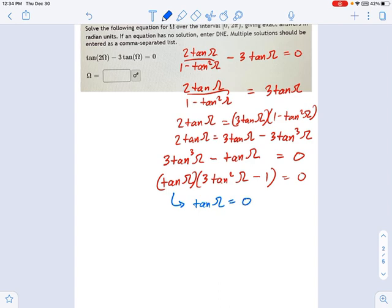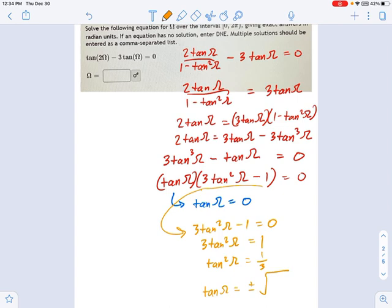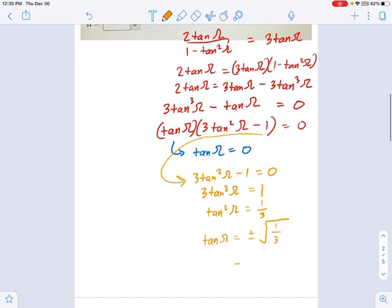And the other solution is going to be this guy. 3 tangent squared minus 1 equals 0. Now that is going to take a little more work. I get 3 tangent squared equals 1, which means tangent squared equals 1 third, which means tangent equals plus or minus the square root. Remember, I'm the one taking the square root, so I have to do plus or minus. Plus or minus the square root of 1 third, which,